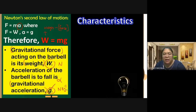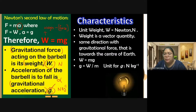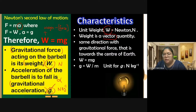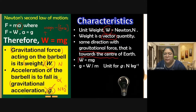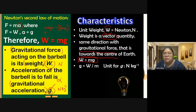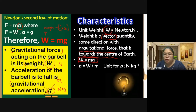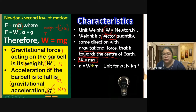Now let's look at the characteristics of weight. The unit for weight is Newtons. Weight is a vector quantity, so its direction always points downwards, following the gravitational force direction towards the center of the Earth. The formula for weight is W = mg, and you can rearrange it to find g as W over m, giving units of Newtons per kilogram.